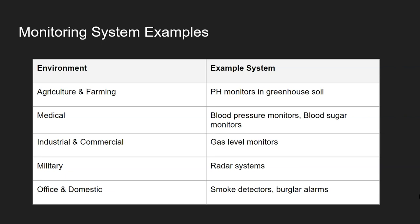Common uses of monitoring systems in different environments include: in agriculture — pH monitors, humidity monitors, and moisture level monitors; in medical — blood pressure monitors and chemical monitors such as blood sugar levels; in industrial and commercial settings — gas level monitors for methane and carbon monoxide depending on the environment; in the military — radar systems; and in office and domestic environments — smoke detectors, carbon monoxide detectors, and burglar alarm systems.